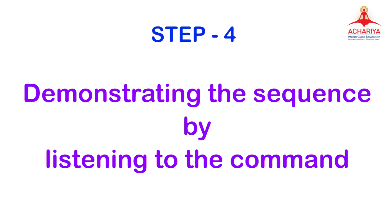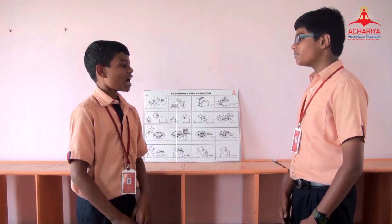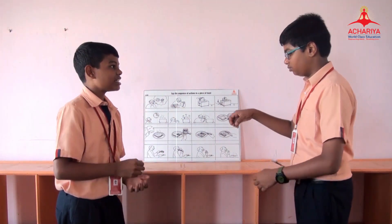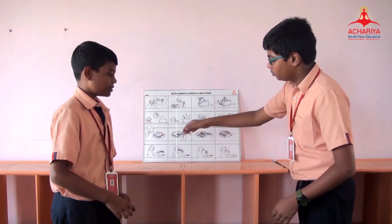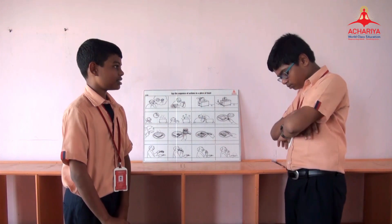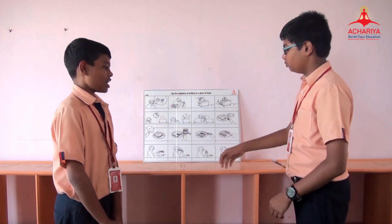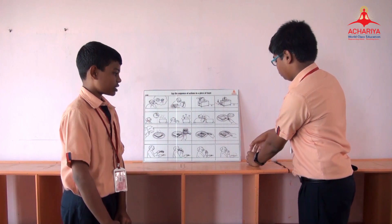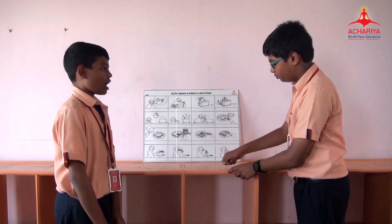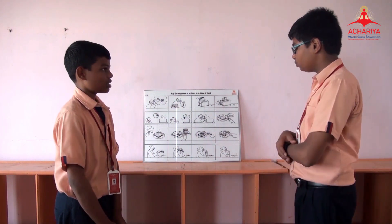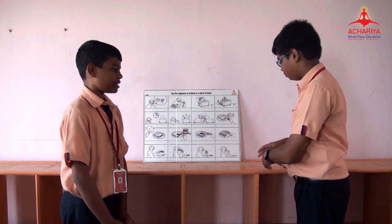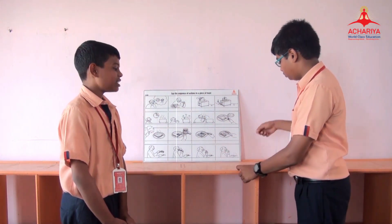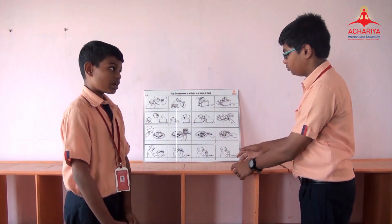Demonstrating the sequence. Do you want to eat the toast? Yes. I will show you how to make it. Okay. Take the bread from the bread bag, insert it in the toaster, turn on the toaster, wait for 60 seconds. The toast will come out — take the toast and keep it on the plate. Apply butter over the toast and wait for the butter to melt. Apply jam over the butter to make it more delicious. And then cut the toast into two and enjoy eating it.